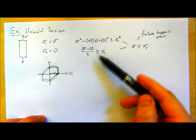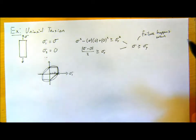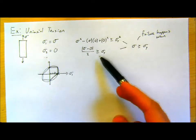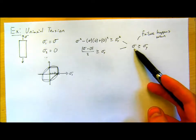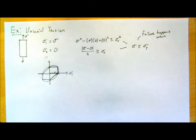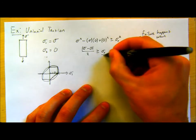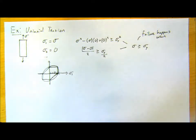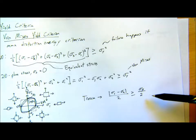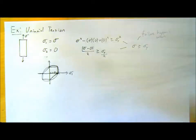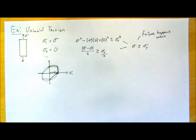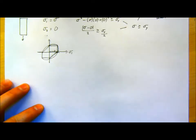Plugging values into our failure criteria, we say: when my axial stress is greater than sigma yield, then failure happens. This is like a sanity check — uniaxial tension fails when we go past the yield strength. That makes sense.